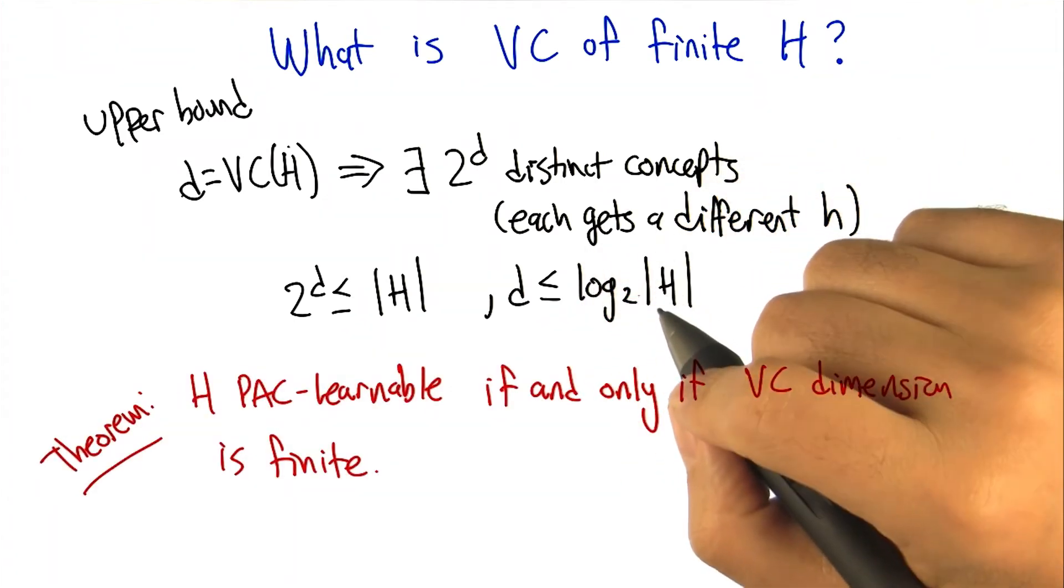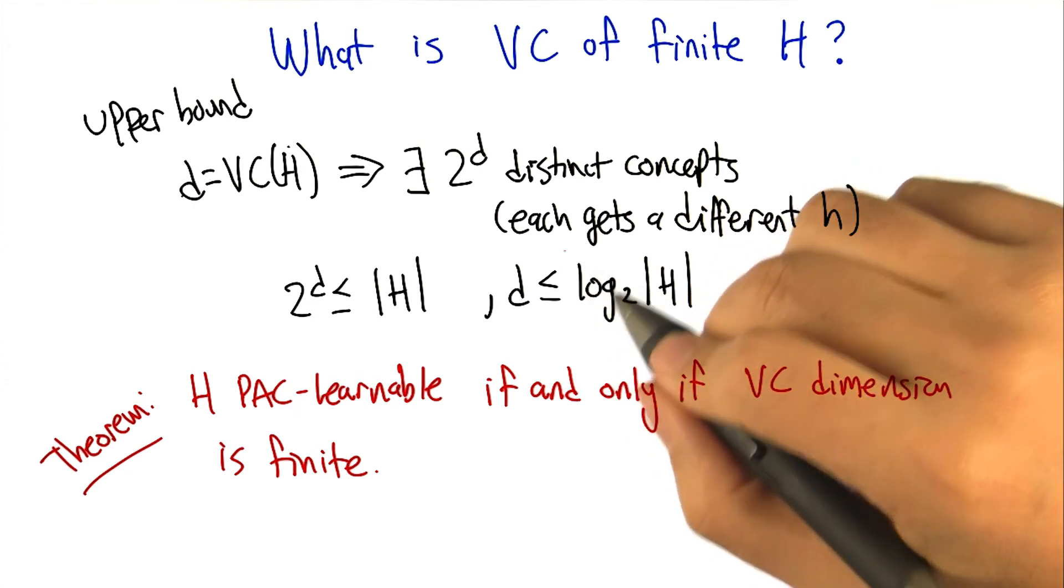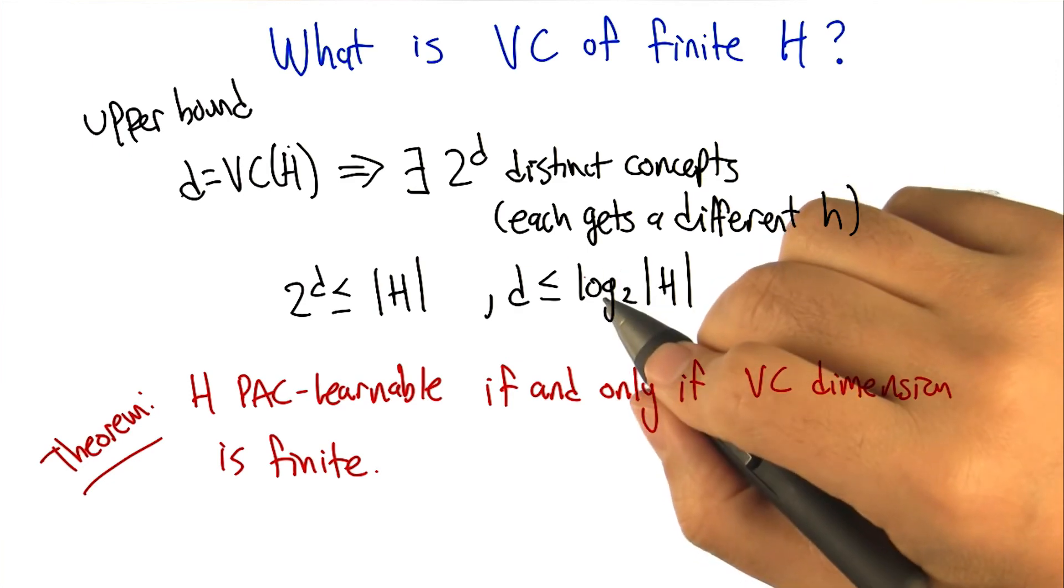So what we're seeing at the moment is that a finite hypothesis class or a finite VC dimension give us finite bounds and therefore make things PAC learnable.